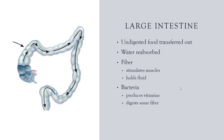So anything that is not digested, or even partially digested, will go through the small intestine into the colon. Since we do not have enzymes to digest fiber, this is the bulk of what will be in the colon, along with a lot of water and some resistant starches.